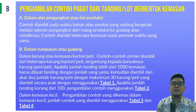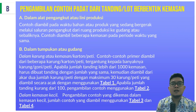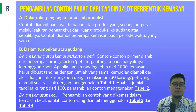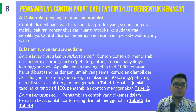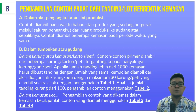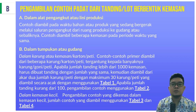Untuk pengambilan contoh padat dari tanding atau lot berbentuk kemasan, kondisi pertama adalah dalam alat pengangkut atau lini produksi: contoh diambil pada waktu bahan atau produk bergerak melalui saluran pengangkut, beberapa kemasan diambil pada periode waktu yang sama. Kondisi kedua, dalam tumpukan atau gudang: apabila dalam karung, kemasan, karton, atau peti, contoh-contoh primer diambil dari beberapa karung atau peti. Apabila jumlah tanding lebih dari 1000 kemasan, maka diambil akar 2 dari jumlah karung atau peti tersebut dengan maksimum 30 karung atau peti secara acak. Apabila jumlah tanding kurang dari 100, maka pengambilan contoh menggunakan tabel 2.